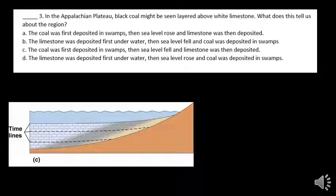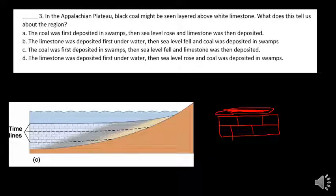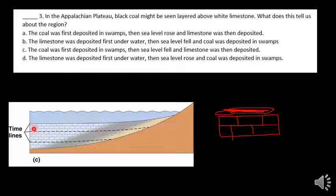Here we have black coal above white limestone. So if we had limestone down here — draw a little symbol for limestone — and then coal deposits on top of it, what was deposited first? The limestone on the bottom tells you that you were in deep water, like offshore. But coal isn't deposited in deep marine water — it's deposited on land.